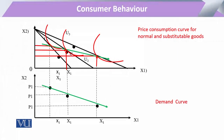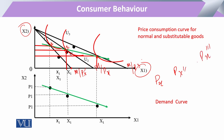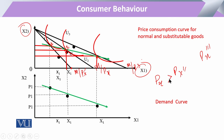Similarly, if we draw the demand curve from the price consumption curve, the various bundles A, B, and C show the relationship of the two commodities x1 and x2 with the change in the price of x1. Each point shows a different price of x1 — the first price, a second price, and a third price — where the third price is less than the second.